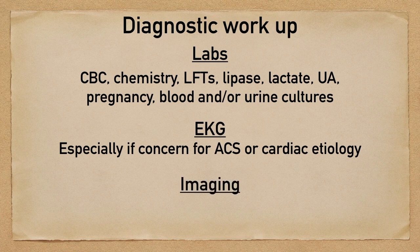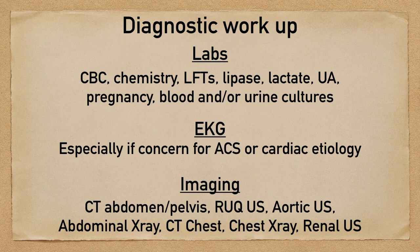The patient may also require imaging. This could include a CT abdomen and pelvis, or maybe you're concerned about hepatobiliary disease and a right upper quadrant ultrasound could help. You could get an aortic ultrasound to assess for AAA. Maybe you're worried about a perforated ulcer and getting an upright chest and abdomen x-ray could show you free air. Abdominal x-rays could also be used to look for obstructive pathology. Maybe you're worried about an intrathoracic cause to their upper abdominal pain and a chest x-ray or CT chest could help with that. If there's any concern for a renal cause, you could consider a renal ultrasound.